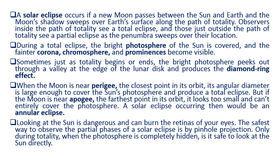A solar eclipse occurs if a new moon passes between the sun and Earth and the moon's shadow sweeps over Earth's surface along the path of totality. Observers inside the path of totality see a total eclipse, and those just outside the path see a partial eclipse as the penumbra sweeps over their location. During a total eclipse, the bright photosphere of the sun is covered and the chromosphere and prominences become visible. Sometimes, just as totality begins or ends, the bright photosphere peeks out through a valley at the edge of the lunar disk and produces the diamond ring effect.